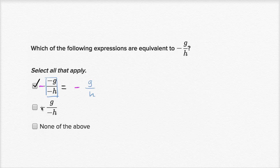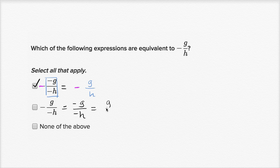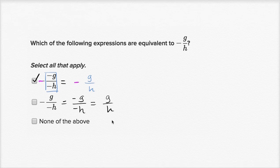This next option has a negative in front, and then g over negative h. You could rewrite this by putting the negative on top: negative g over negative h, which equals g over h — that's positive g over h, not negative g over h. So we wouldn't select that. And of course we wouldn't select none of the above, because we found a choice that we liked.